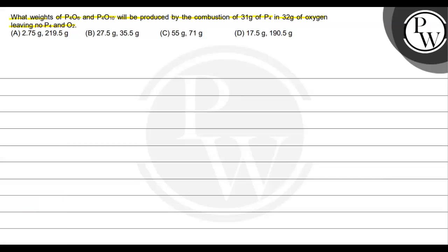Let's solve this question using the limiting reagent concept. The limiting reagent is the reagent that is comparatively less in amount than others, and on this basis our product will be determined. First, we'll consider P4O6. The reaction is P4 + O2 → P4O6. If we balance it, we multiply O2 by 3, giving the balanced equation: P4 + 3O2 → P4O6.